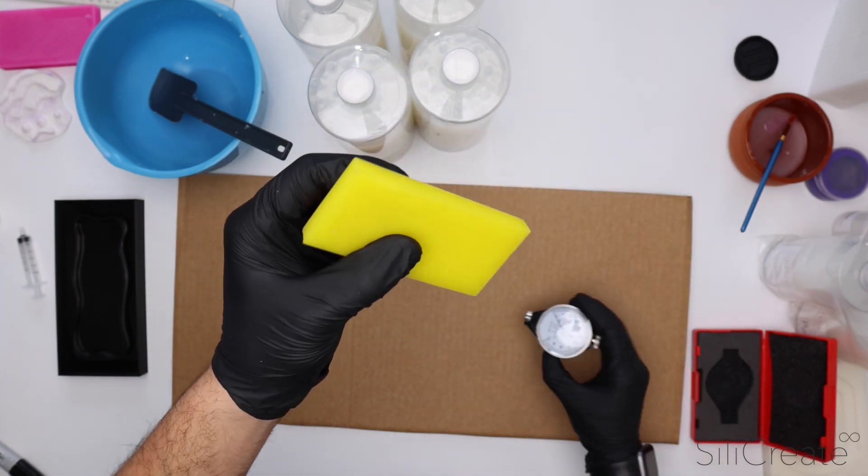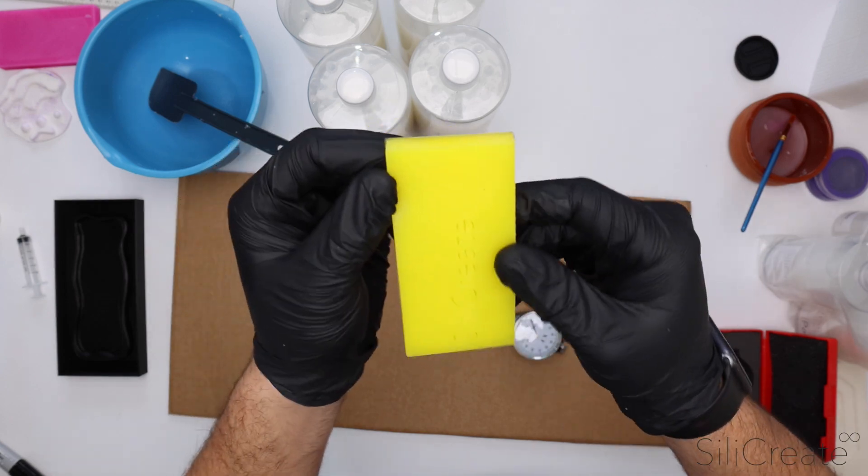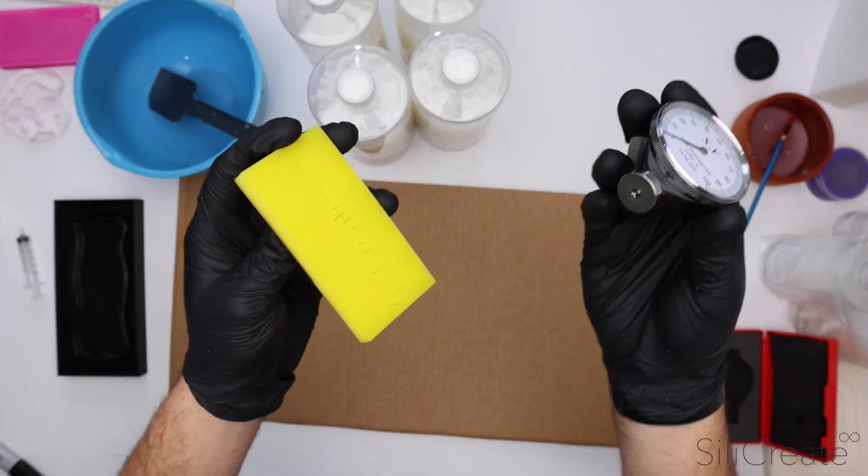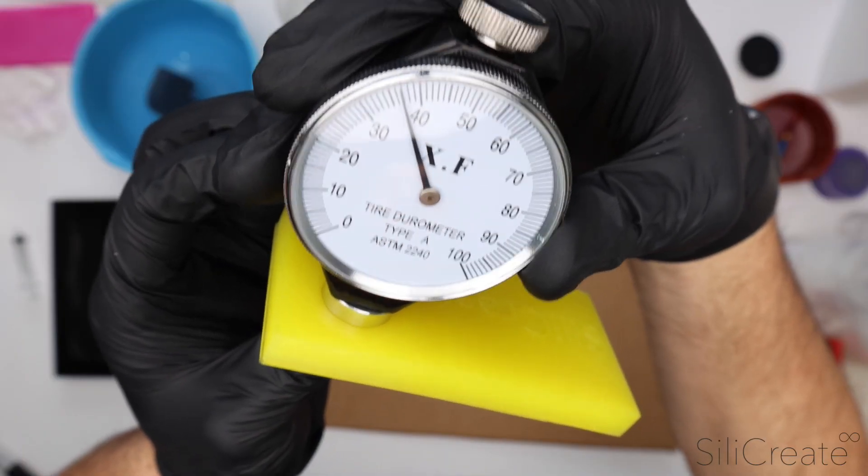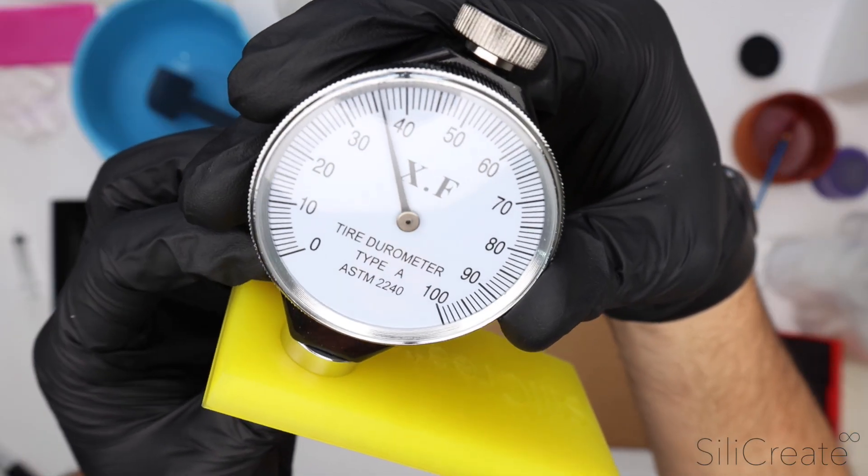This one we were shooting for 37 and a half, so this one was made with our 30A and our 45A silicons mixed together, and that'll be in a 50-50 ratio as well. It's probably a little bit under again but pretty close. I'd say 36-37.